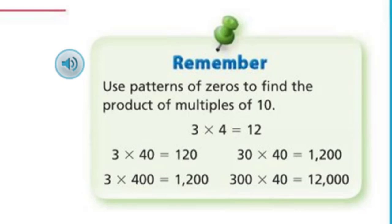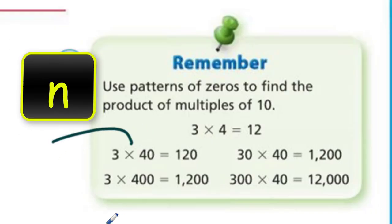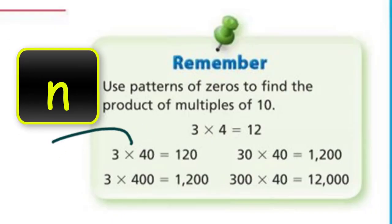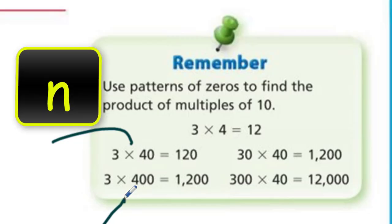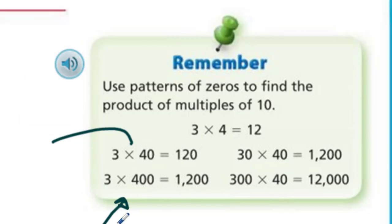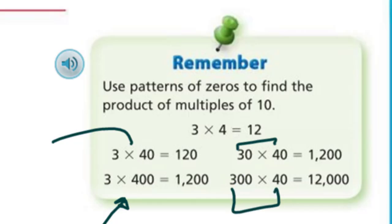Remember, use patterns of zeros to find the product of multiples of 10: 3 times 4 equals 12; 3 times 40 is 120; 3 times 400 is 1,200. We kind of covered this already by looking at simple facts and powers of 10.